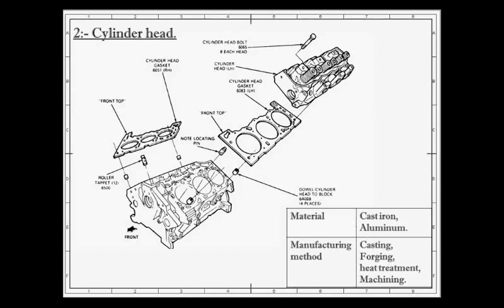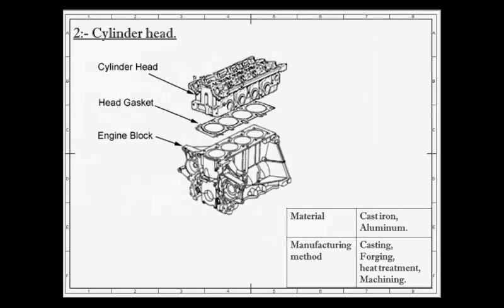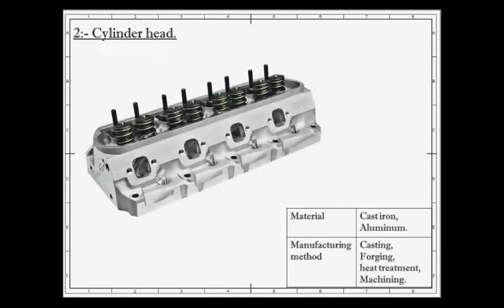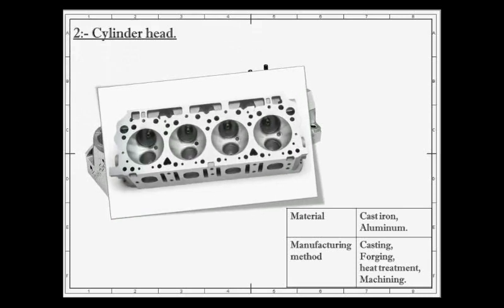Cylinder head is usually made by cast iron or aluminum. The cylinder head is usually cast as one piece and bolted to one end of the cylinder. Generally, the cylinder block and cylinder head are made from the same material. A copper or asbestos gasket is provided between the engine cylinder and cylinder head to make an airtight joint.